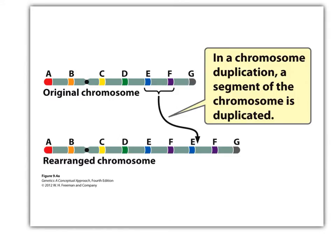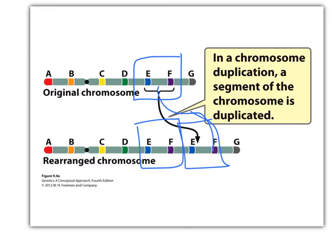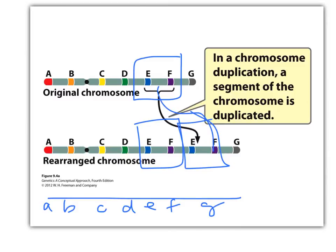If we have a duplication, that's where a segment of the chromosome is recopied and then added back in. This is the duplication — this was the original, and we made another copy, so now we have two in a row. This again would change the dosage because on the other chromosome we have three copies of gene E and three copies of gene F. This could be fine depending on dosage and what it is, or it could be a disaster.